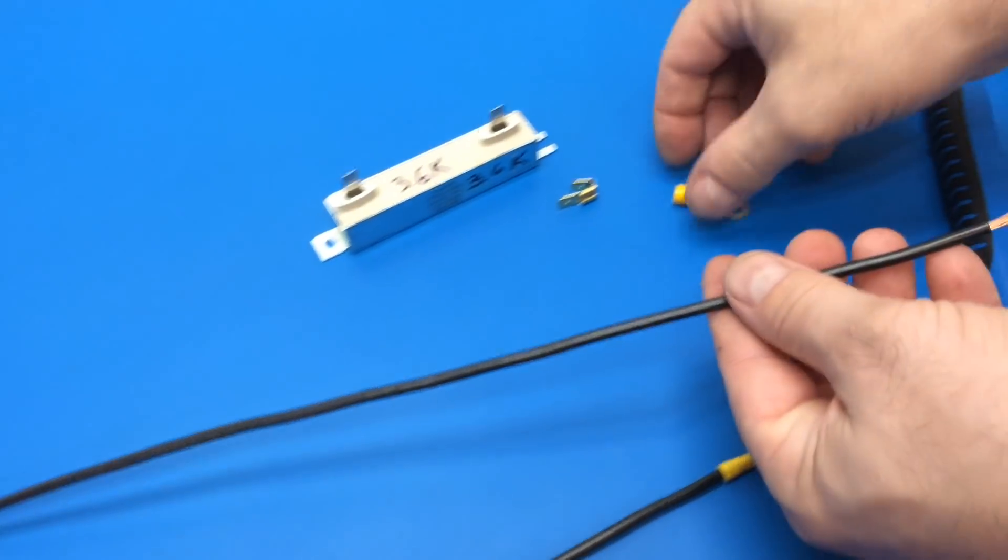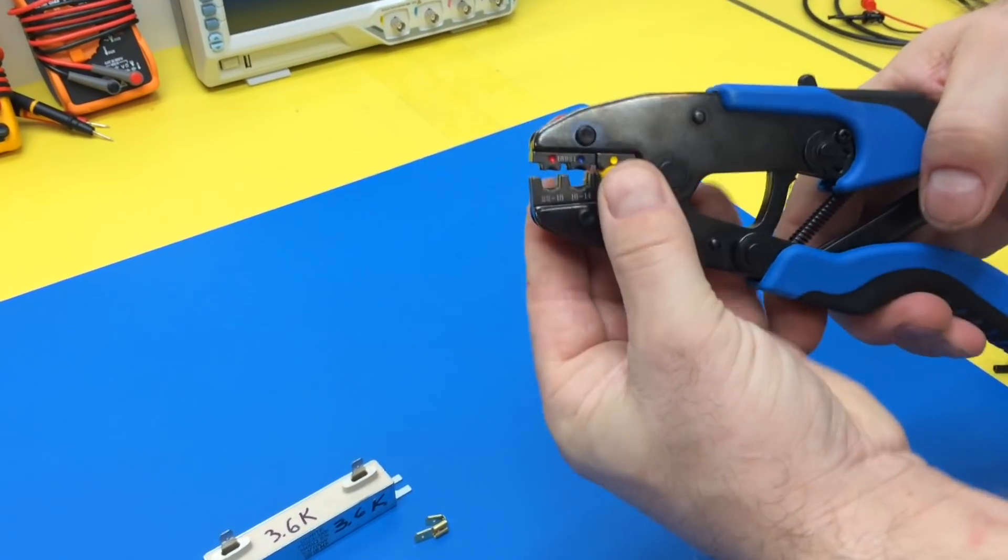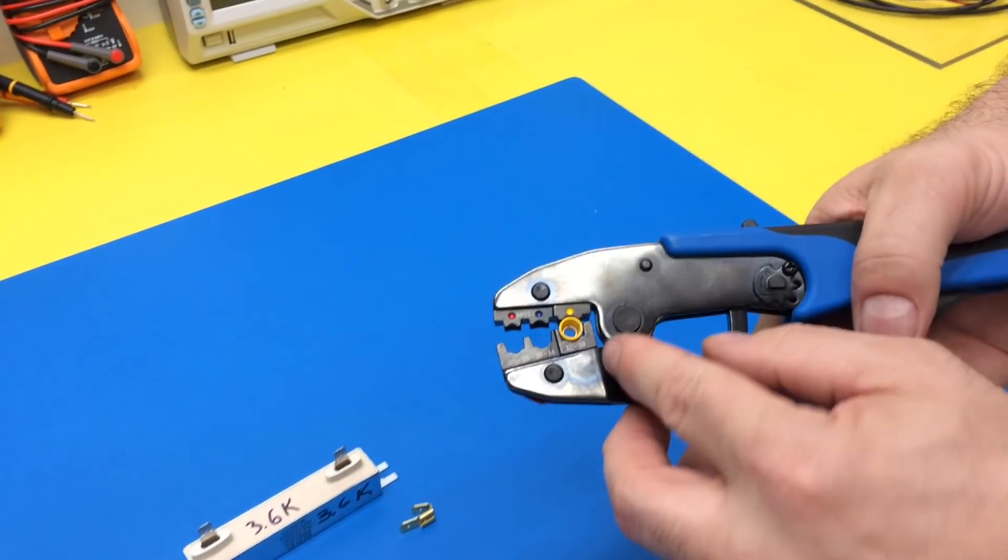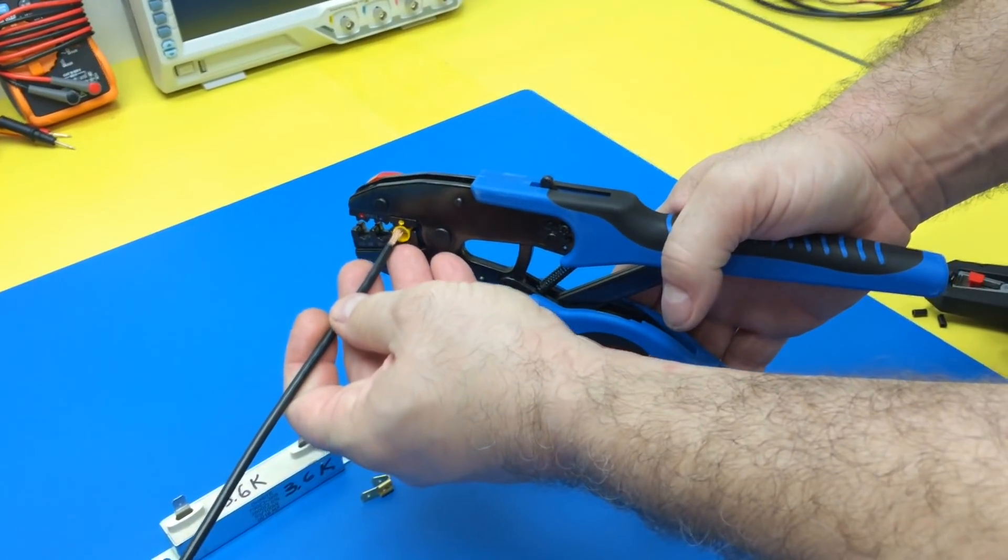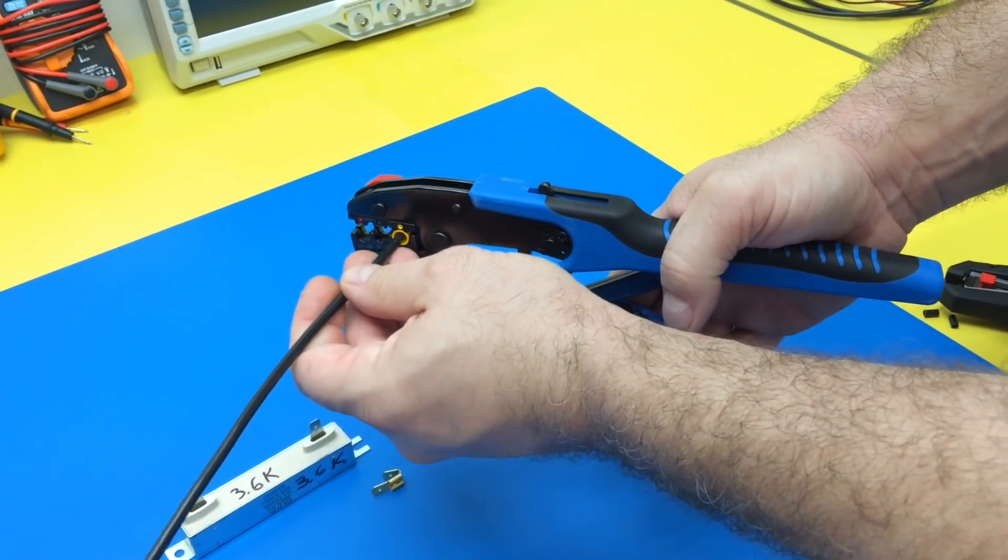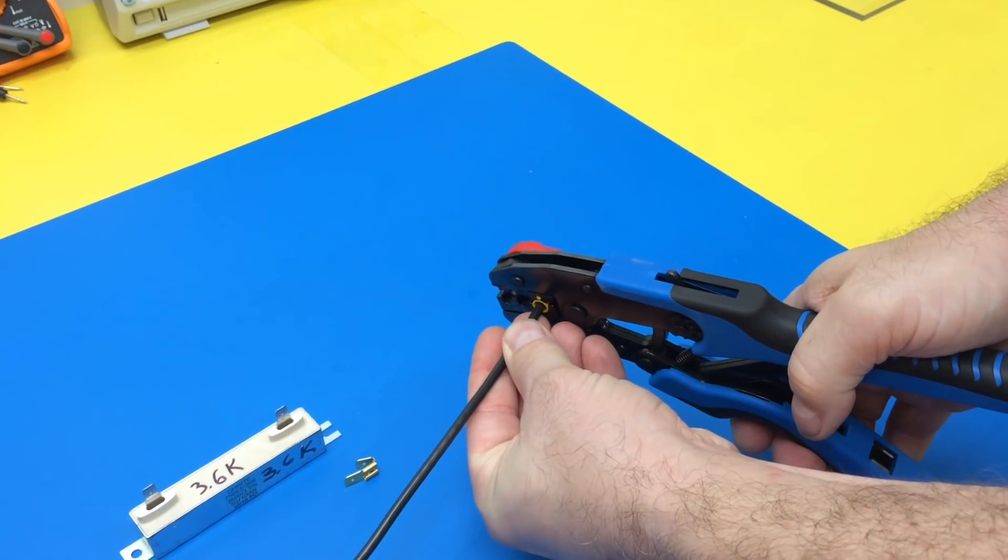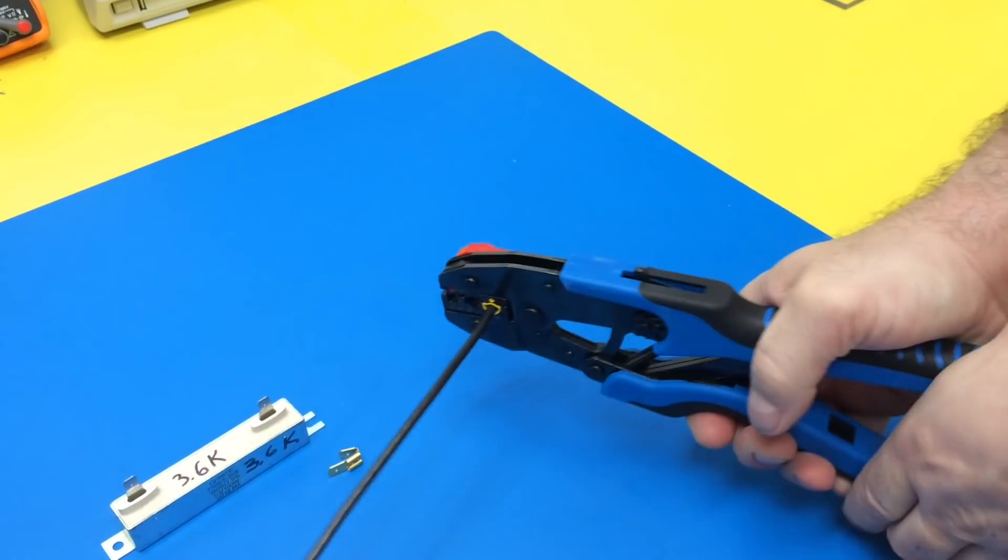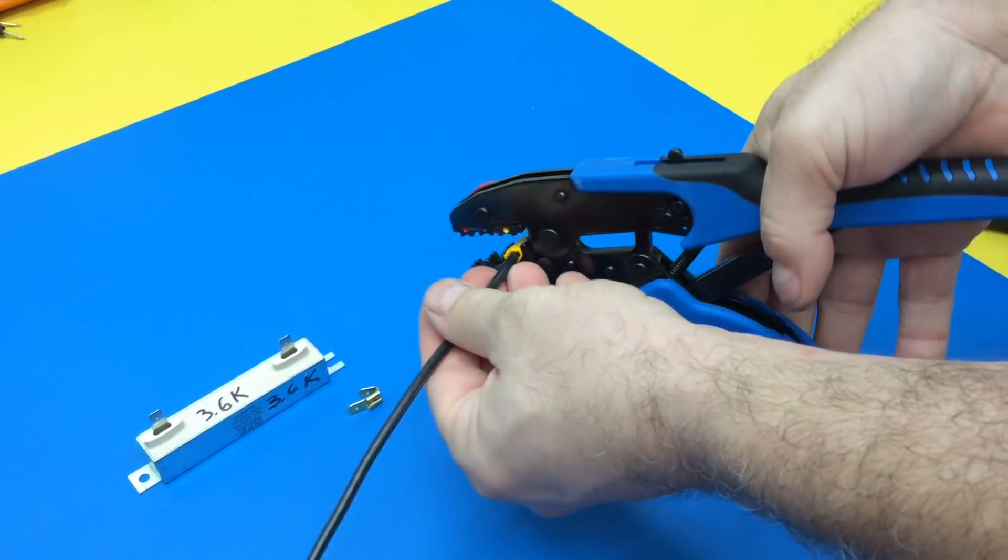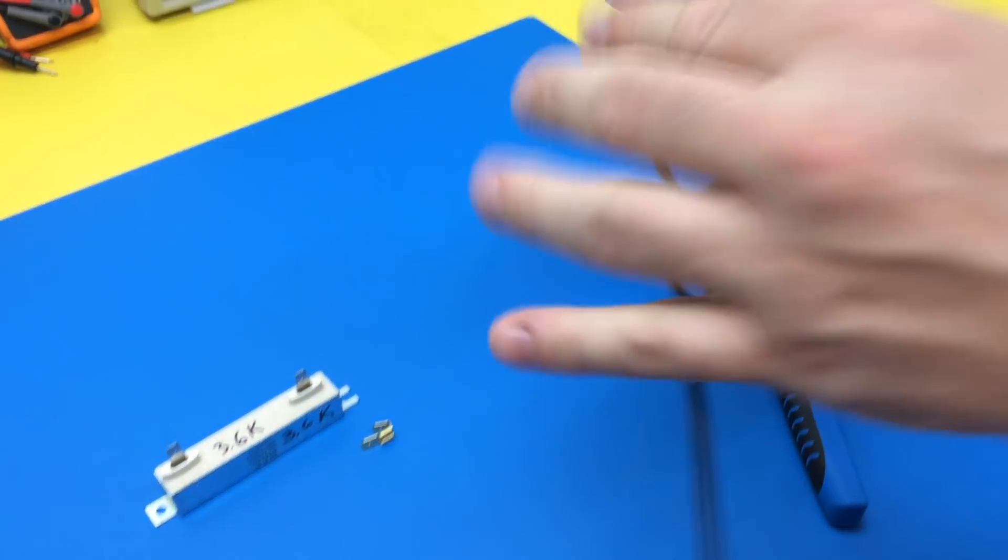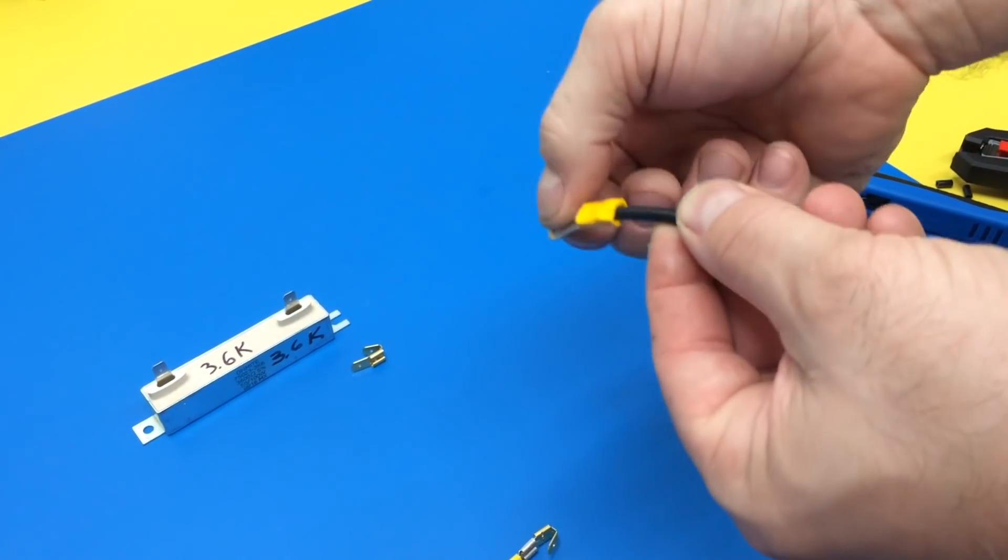This one will crimp better, so let's take a look at this one. We'll put this in here - same thing. Now we'll put that in, see it on the end, and this one's going to take a lot more pressure to actually crimp.